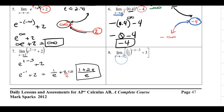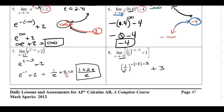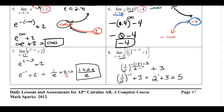For Example 8, x approaches negative 2. Plugging in: (1/2)^(-(-2)-3) + 3 = (1/2)^(2-3) + 3 = (1/2)^(-1) + 3. Applying the reciprocal property, (1/2)^(-1) = 2. So the result is 2 + 3 = 5.